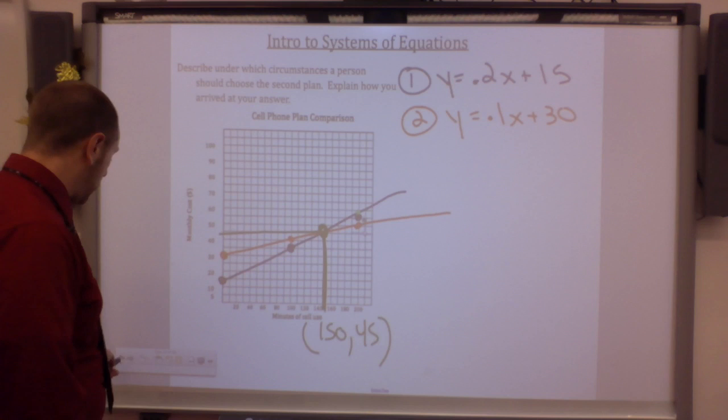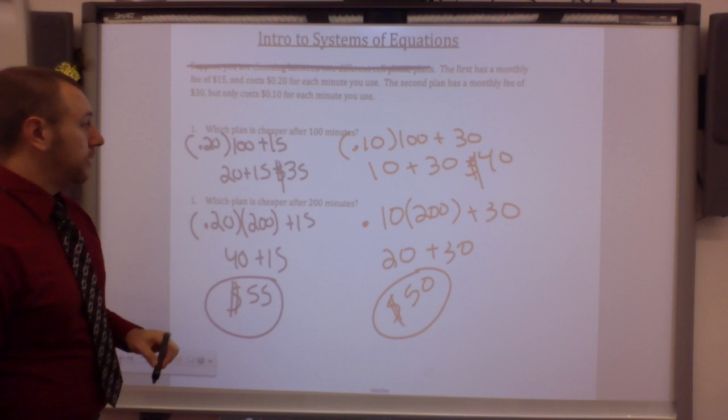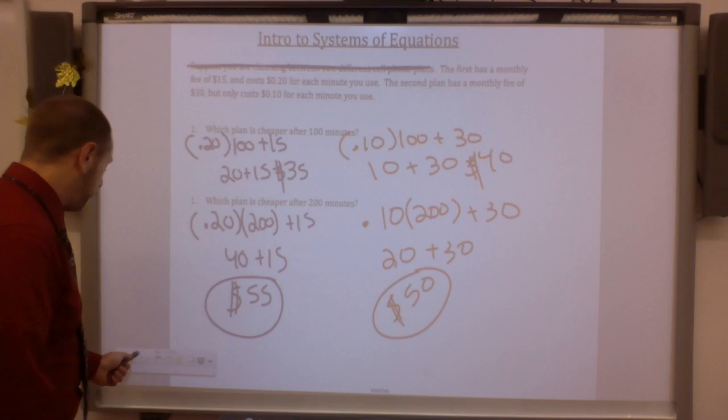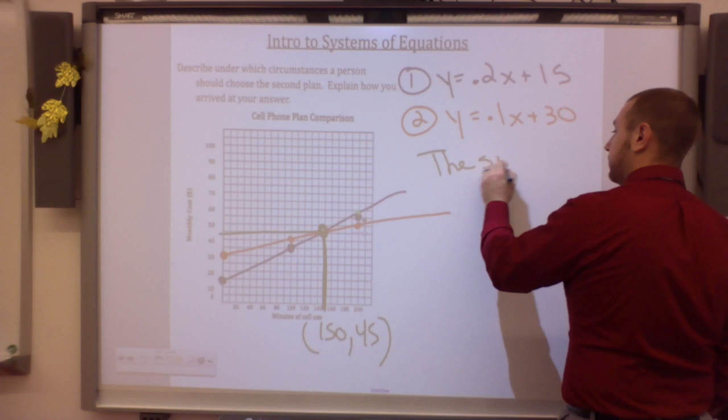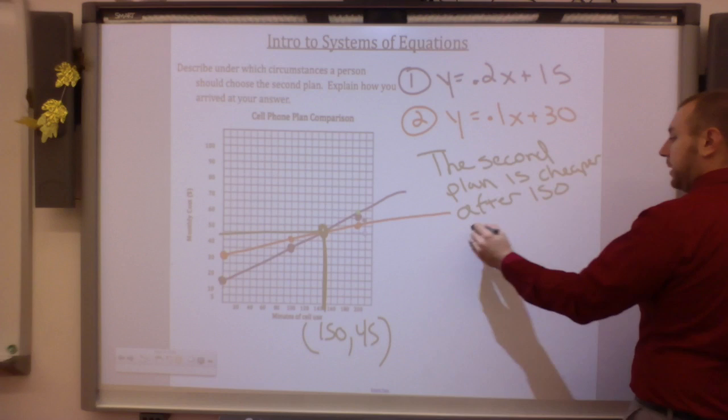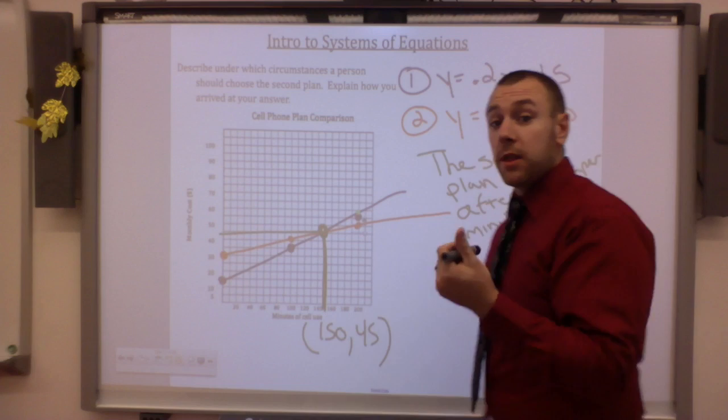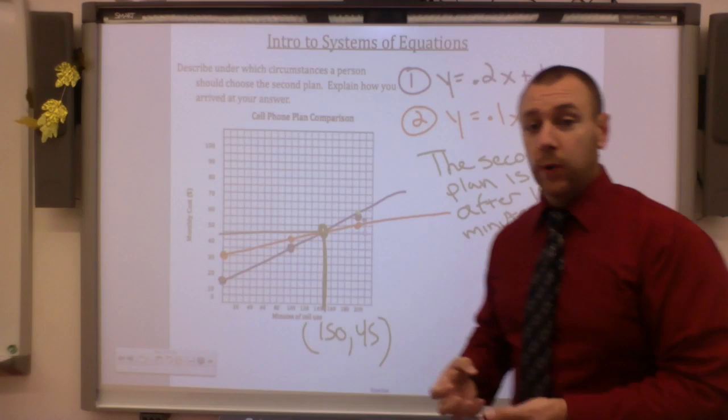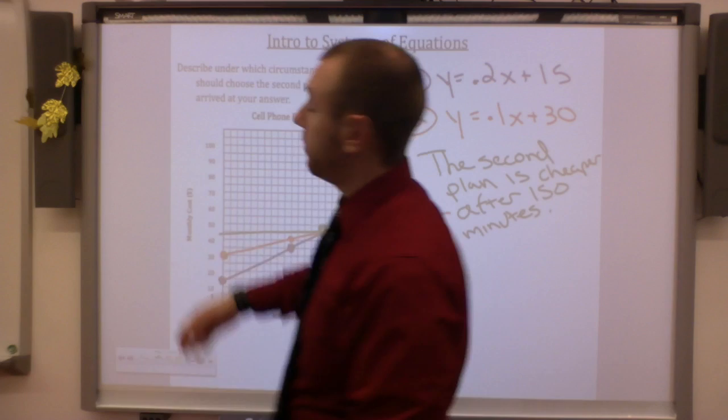And if you actually look at our answers, 100 and 200, in the middle of that is 150. 35, 55, that's at 45. Surprise there. 40 and 50, what's in the middle of 40 and 50? 45. So how do I answer this? The second plan is cheaper after 150 minutes. Boom. The first plan is cheaper before 150 and it doesn't matter if I just use exactly 150. That is called a solution to a system of equations. I find the intersection. So you have to remember how to graph.